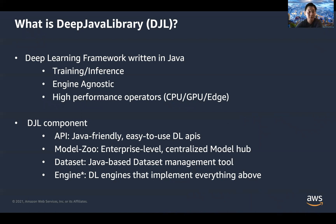Deep Java Library also supports different high-performance operators, such as mathematical operators like sum, subtraction, multiplication, and division. It even supports advanced operators like softmax and all neural network operations. Behind the scenes, it leverages all system resources including CPU, GPU, and can even run on edge devices such as Android.